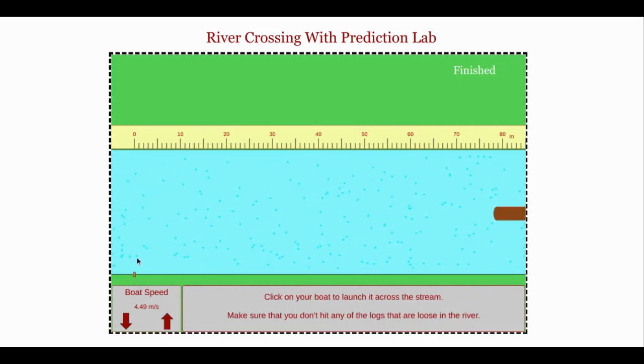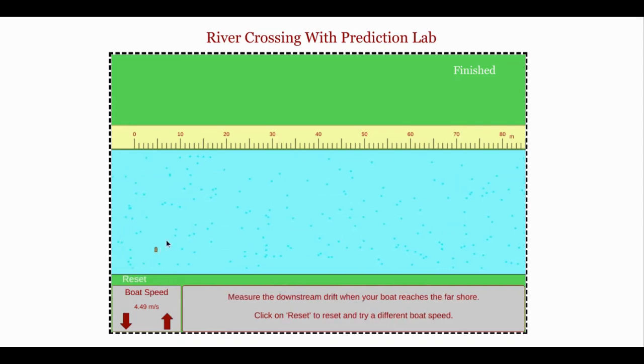The boat has a vector pointing north, and the river has a vector pointing east. So the resulting vector for the boat is the combination of those two.